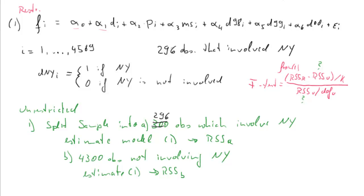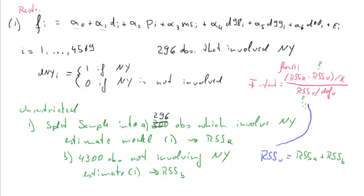Then the unrestricted RSS is simply RSS_A plus RSS_B. That would be our RSS_unrestricted to plug into the F-test formula. That was the first strategy, and it was the one you could use with the information provided in the tutorial, since those two RSS values were given.